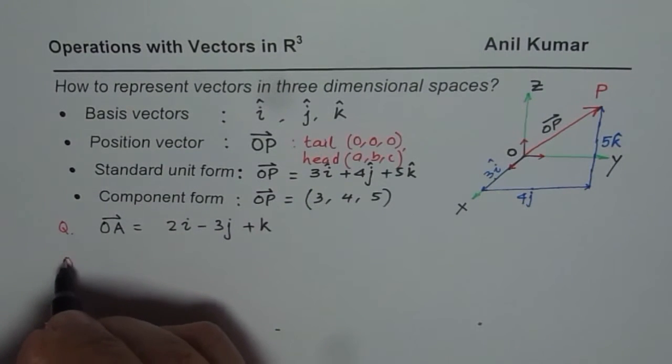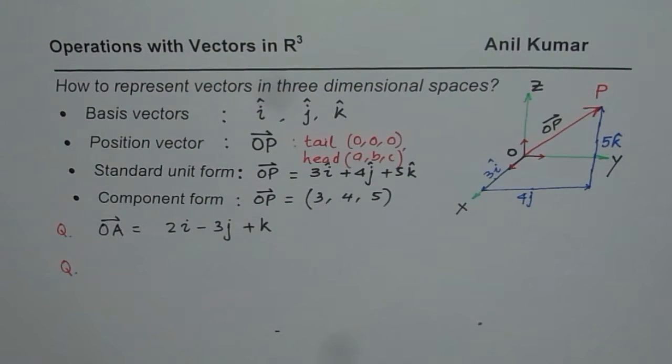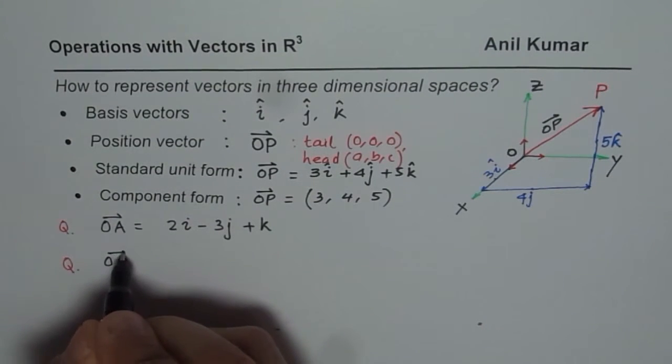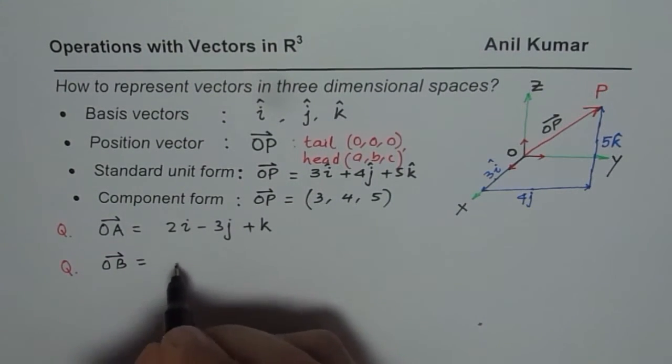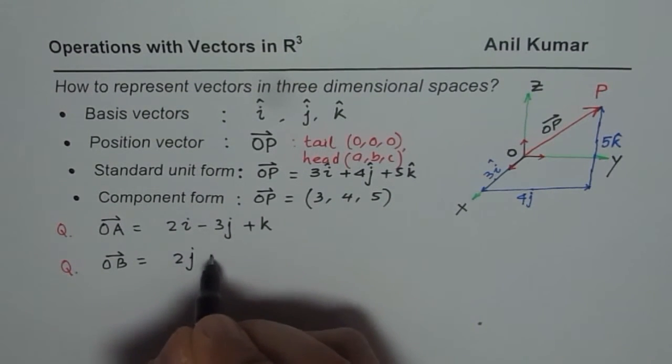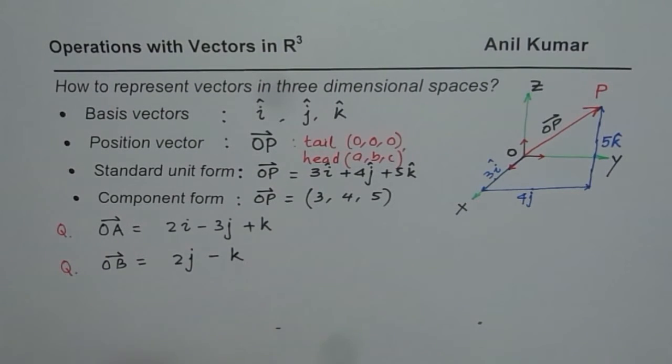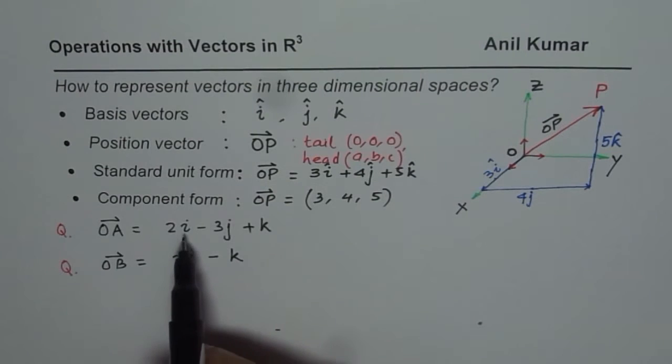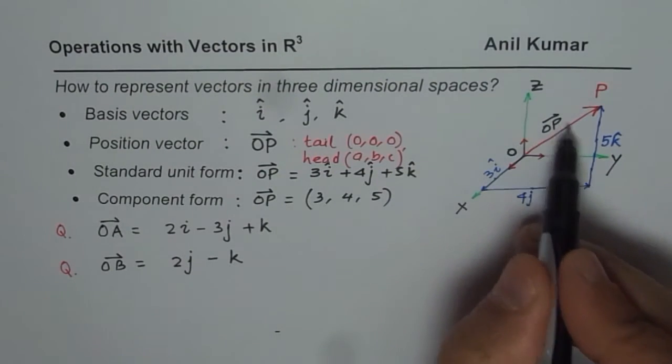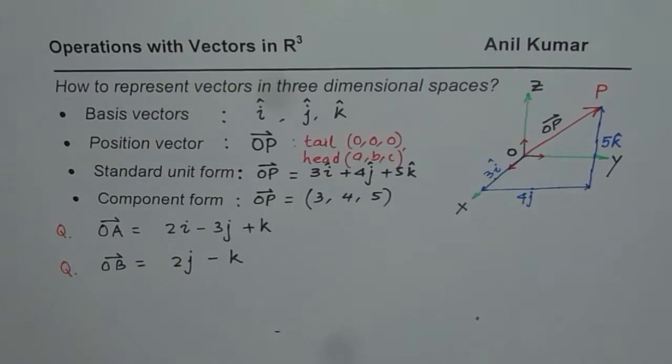Question 2: vector OB. If I say the vector OB is 2j minus k, that means the component along i is 0. That means it is on the plane y and z. This vector is on the plane y and z.